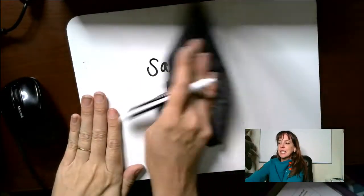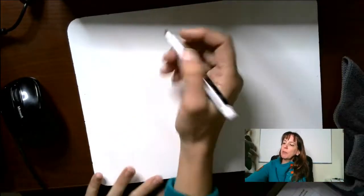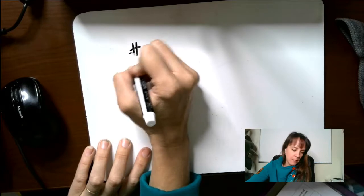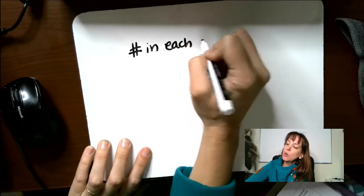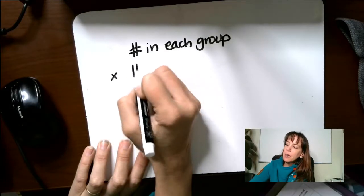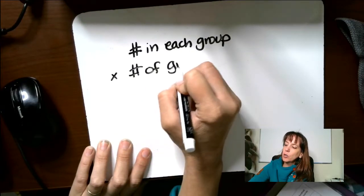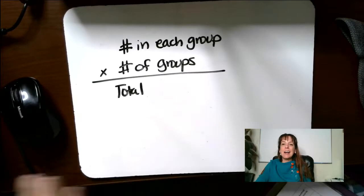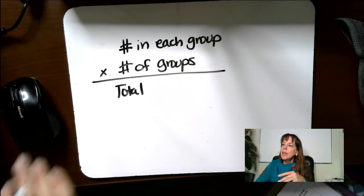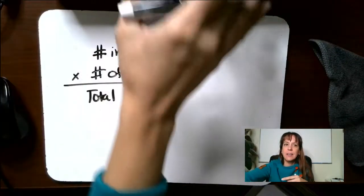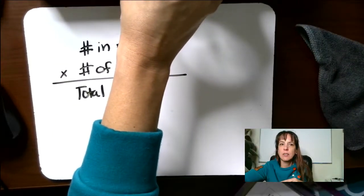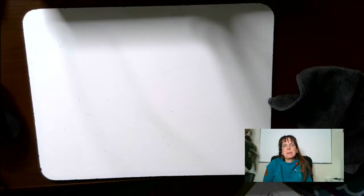Math is all about patterns. So guys, get out your notebook. I want to make sure you're writing this down. This pattern is going to be number in each group times number of groups equals the total. Write that down. For math or for multiplication problems and division, often what you'll see is that if you see the word each, that's usually an indication.